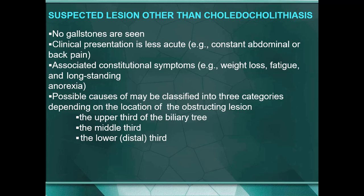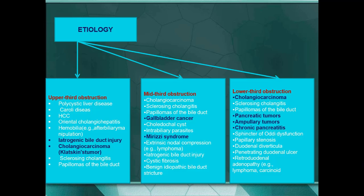When no gallstones are found on ultrasound and clinical presentation is less acute — with constant abdominal or back pain and constitutional symptoms such as weight loss, fatigue, and anorexia — think about malignancy first. Possible causes are classified into three categories depending on the location of the obstructing lesion: upper third, middle third, and lower third. Upper third obstruction includes polycystic liver disease and Caroli's disease; middle third commonly includes gallbladder cancer, Mirizzi's syndrome, and cholangiocarcinoma; lower third includes cholangiocarcinoma, pancreatic tumors, periampullary tumors, and chronic pancreatitis.